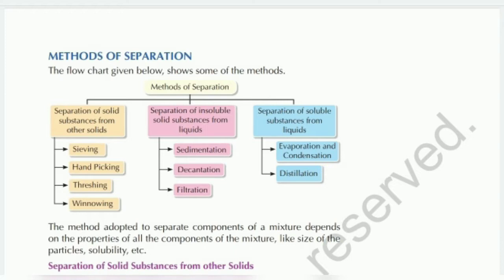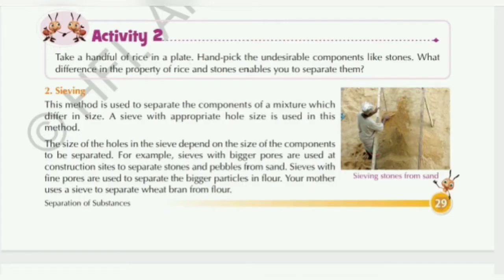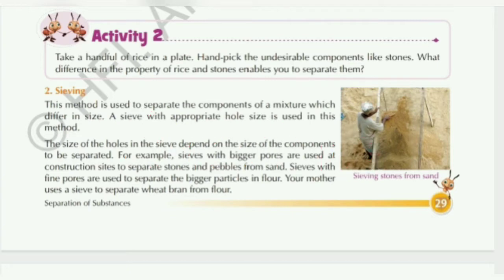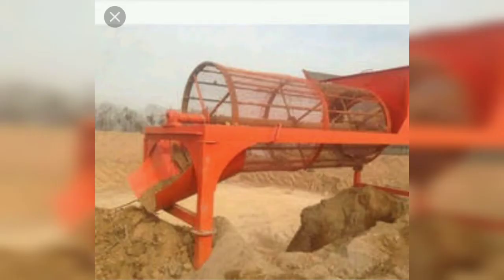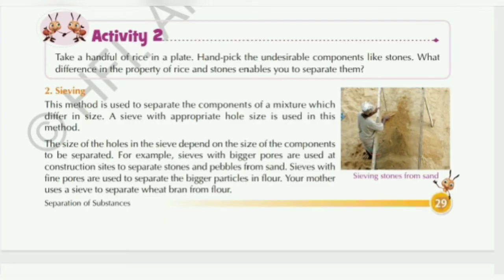The first one, hand-picking, I already told you, so I am not explaining again. Second one is sieving. Using this method we can separate components with different sizes. That kind of method is known as sieving.